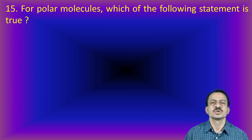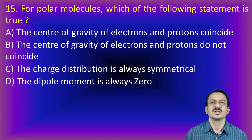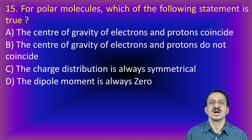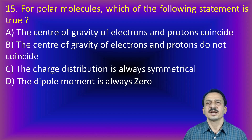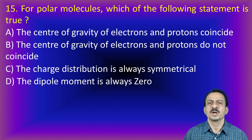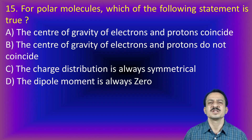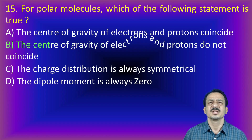Next problem: for polar molecules, which statement is true? By theory, polar molecules are those in which the centers of positive and negative charges are separated by a certain distance. Therefore, the center of gravity of electrons and protons do not coincide. The answer is B. This is a simple theoretical concept.